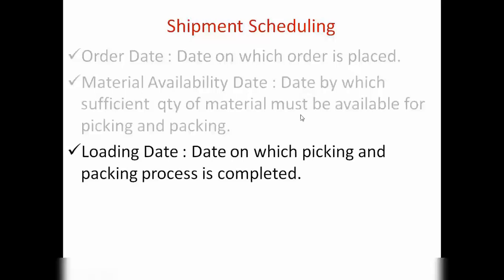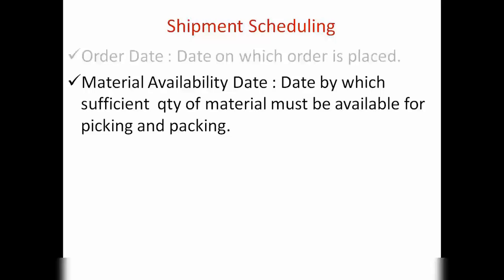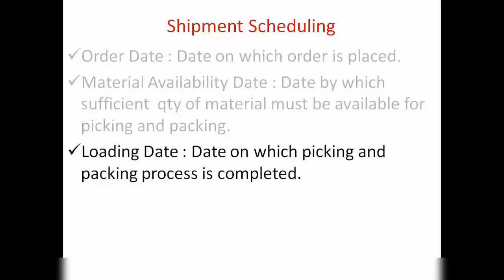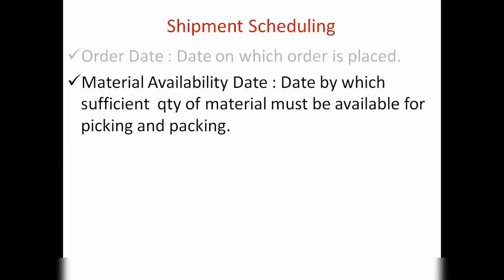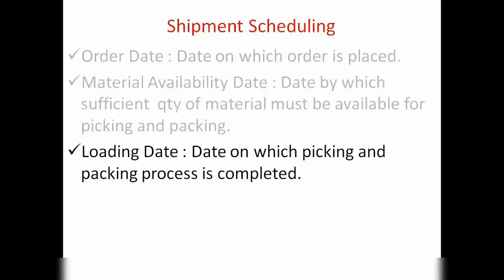Then we have loading date. Loading date is the date on which the picking and packing process is completed. For example, if the material is available today, it doesn't mean we will be shipping the goods to the customer on the same day — we also need some time in the plant to do the packing, picking, and all that internal work. So that time determines your loading date. It could take one day, two days, or even the same day.